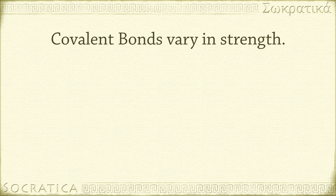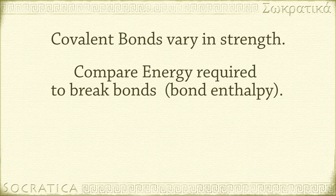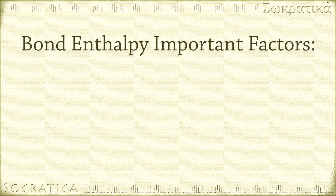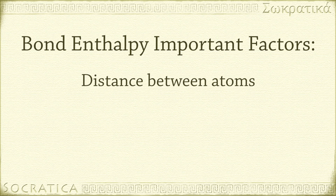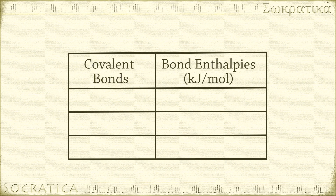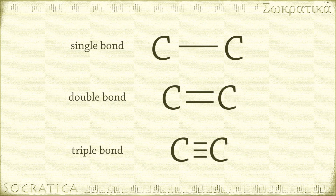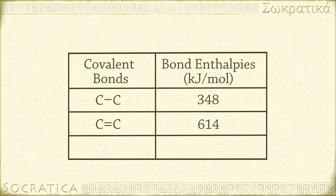Covalent bonds also vary in their strengths. We can compare these bond strengths by measuring the energy required to break the bonds — we call these bond enthalpies. Just like lattice energies for ionic compounds, bond enthalpies for covalent molecules are influenced by factors such as the distance the atoms are held from each other and the differences in their electronegativities. A single covalent bond between carbon atoms has a bond enthalpy of 348 kJ per mole, while a double bond between carbon atoms has a bond enthalpy of 614 kJ per mole. Double bonds, where atoms share two pairs of electrons, are shorter and stronger than single bonds. Triple bonds are shorter and stronger still — a triple bond between two carbon atoms has a bond enthalpy of 839 kJ per mole.